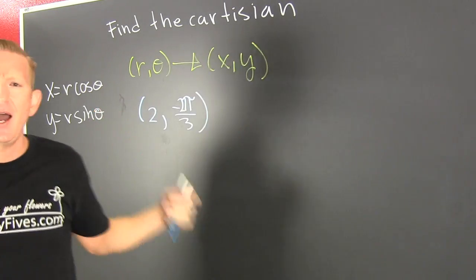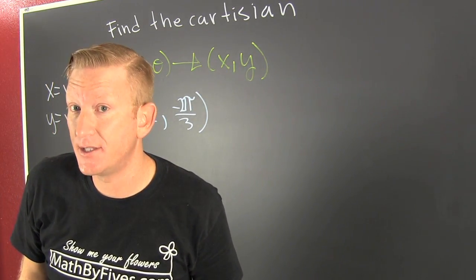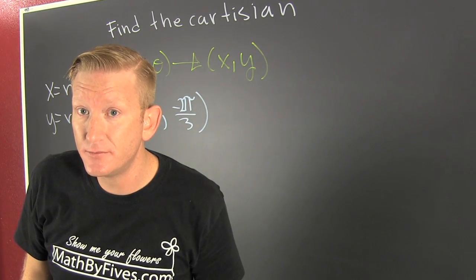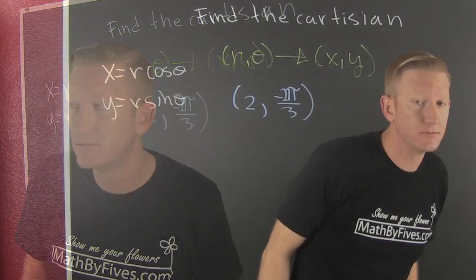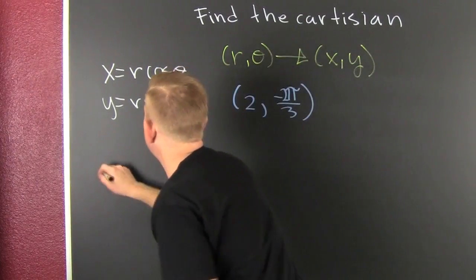Where is this? This is our point. So that's the one we're converting. But how are we going to take r's and thetas and convert them to x's and y's?